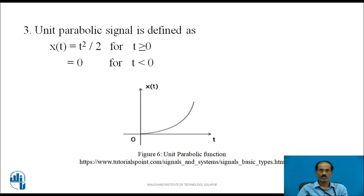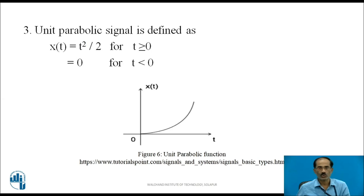The unit parabolic signal is defined as x(t) = t²/2 for t ≥ 0, and 0 for t < 0. Substituting values: x(0) = 0, x(1) = 1²/2 = 0.5, x(2) = 2²/2 = 2, and the value keeps increasing up to plus infinity. On the negative side, x(t) = 0 for all t from minus infinity to 0.